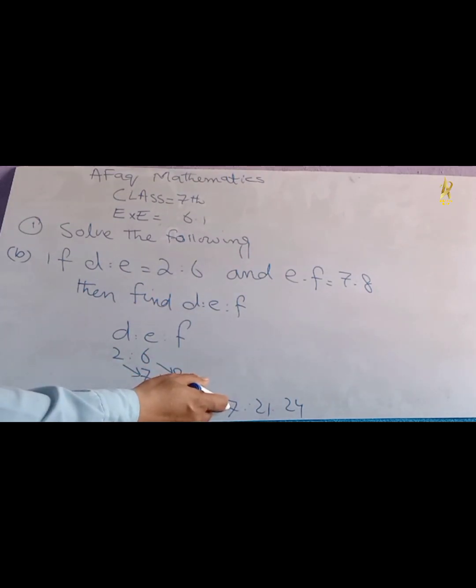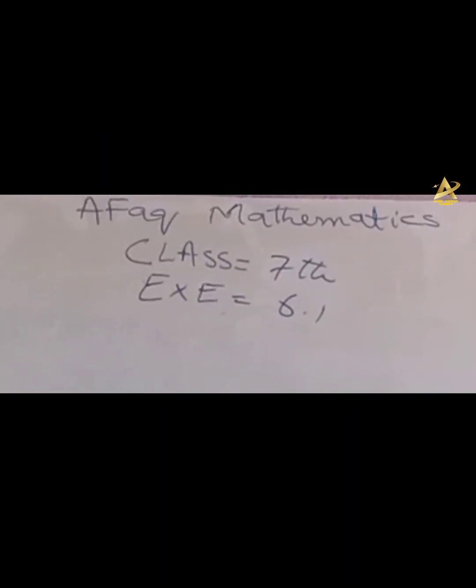We check if we can simplify further: 7 is a prime number, 21 is divisible by 7, but 24 is not divisible by 7. This means 7 ratio 21 ratio 24 is the answer.